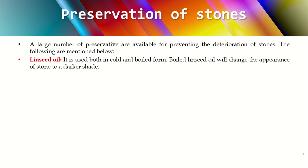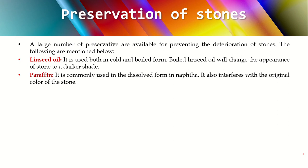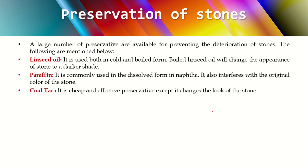One disadvantage of linseed oil is that it requires frequent renewal — you have to apply it once a year. The next preservative is paraffin or paraffin wax. It can be applied directly or dissolved in naphtha and then applied. It acts as a good preservative in preventing stone decay, but has a small disadvantage in that it also interferes with the color of the stone.